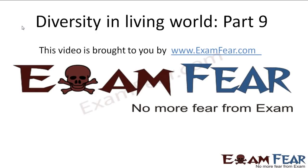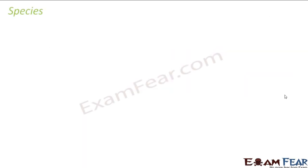This video on diversity in living world part 9 is brought to you by examfear.com. We are going to discuss each taxonomic category in detail. We will start with the lowermost level, that is species. We will talk about all seven taxonomic categories — it is very important to understand this concept of taxonomy, because only then will you be able to understand the basics of nomenclature, that is how you name organisms. Let us see what species are.